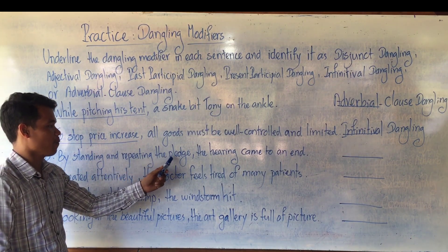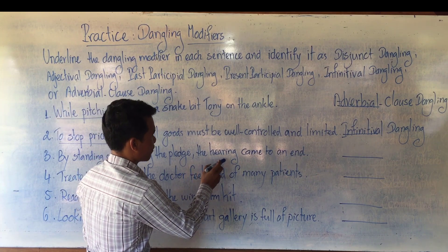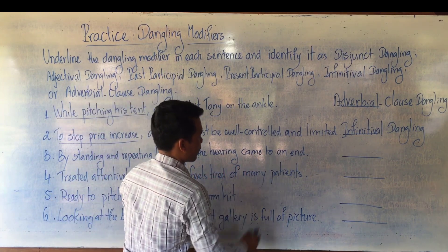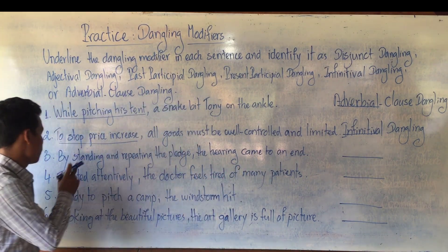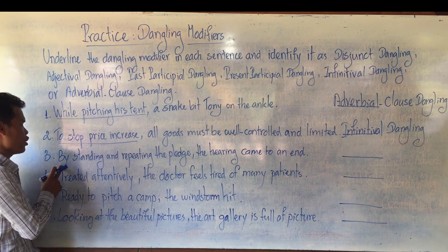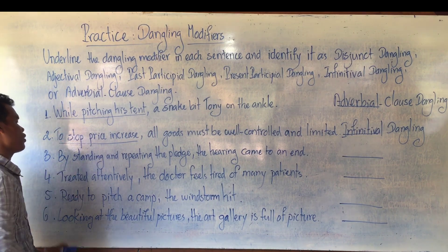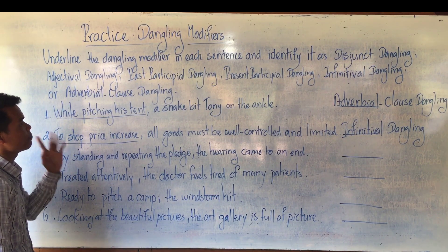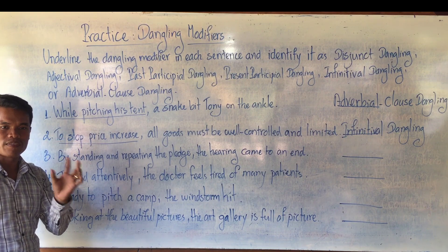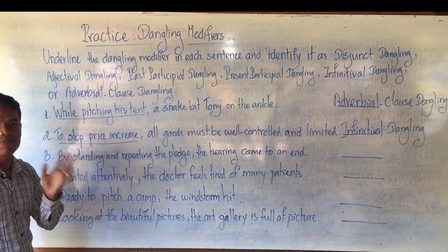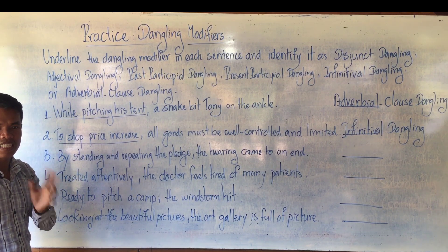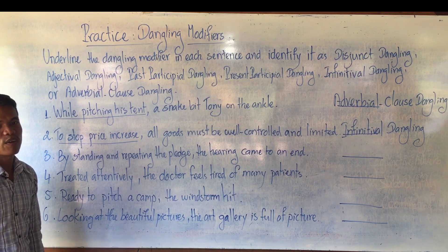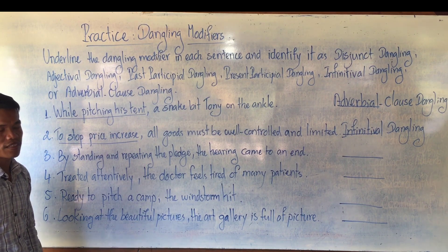The next example starts with a preposition — 'came to an end' — where after the preposition is a verb. So it comes at the beginning of the sentence by using a preposition plus noun phrase. So what type is it? It is disjunct dangling.